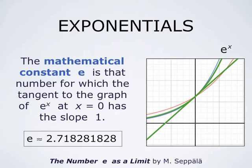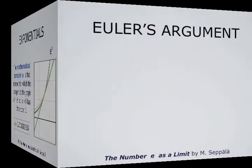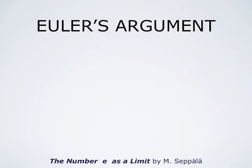A numeric approximation for e is that e is approximately 2.718281828 and so forth. e is an irrational number. This definition for the exponential function was also the definition that Euler used.